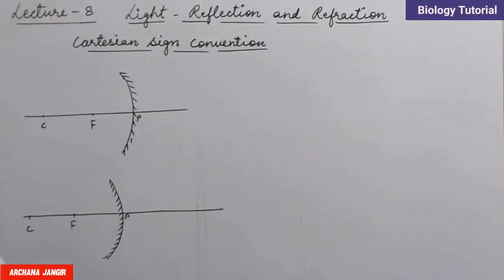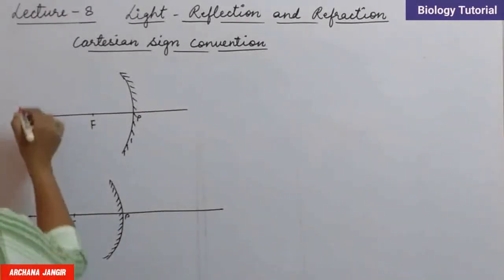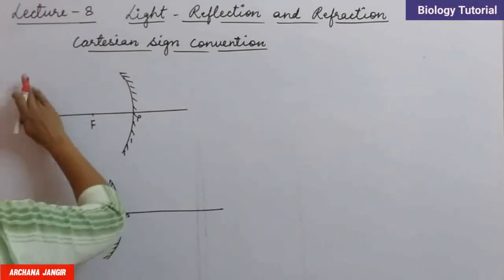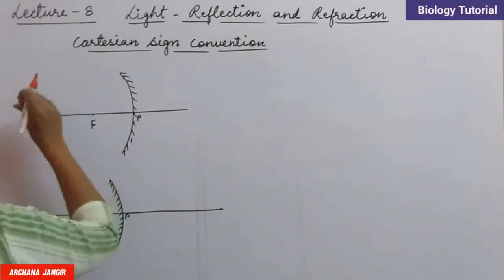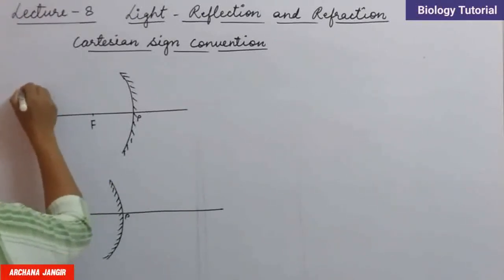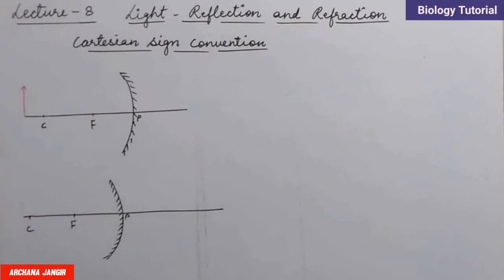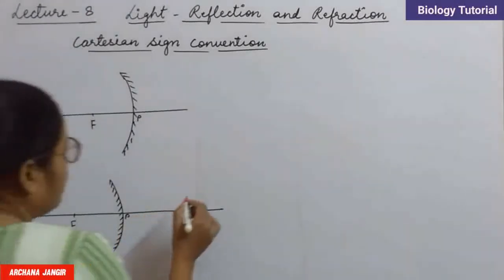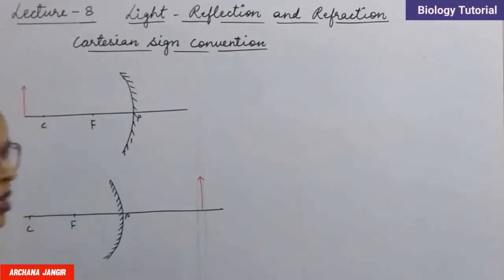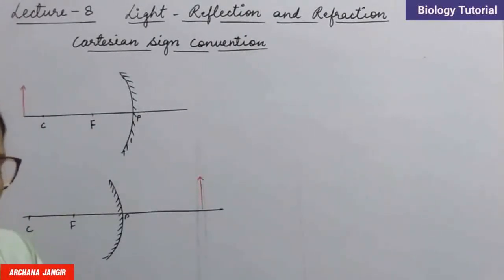The object which is placed — this is the object. So the object is placed on this side when the mirror is concave, and here is the object in case of convex mirror. Now, what is Cartesian sign convention?